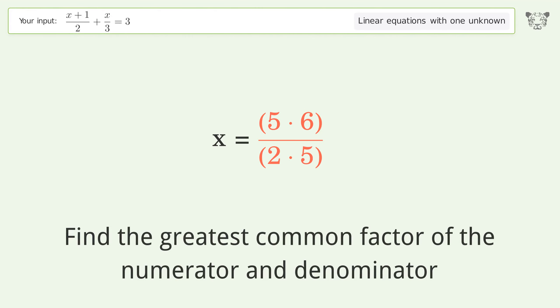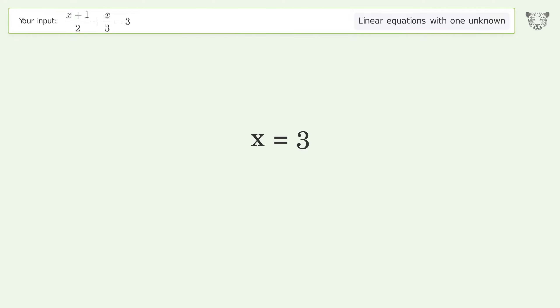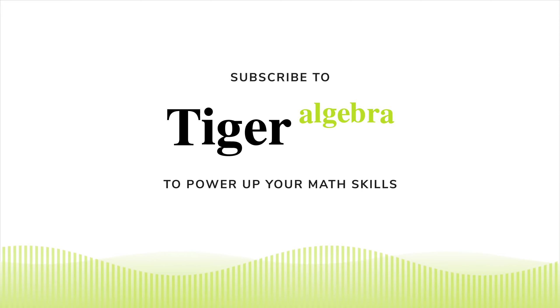Find the greatest common factor of the numerator and denominator. Factor out and cancel the greatest common factor from the numerator. The final result is x equals 3.